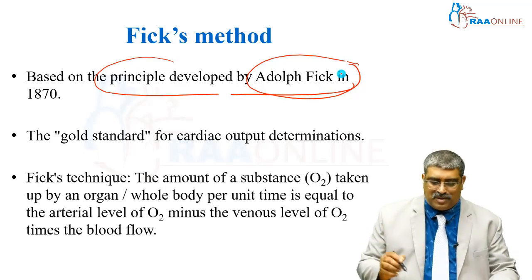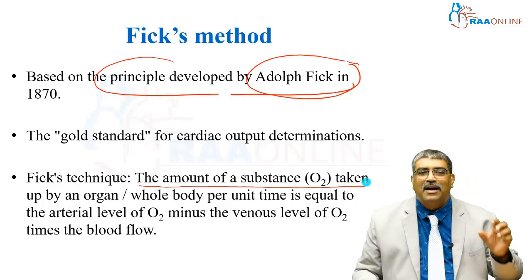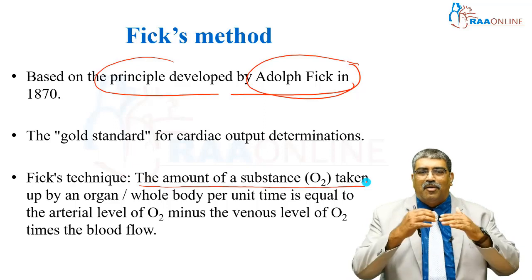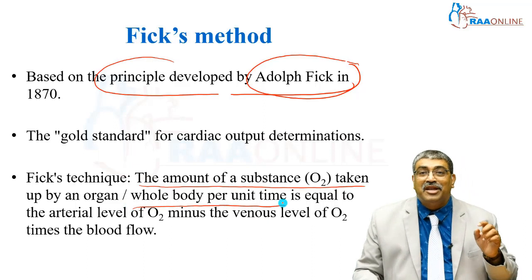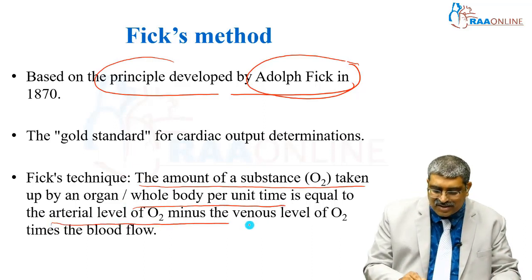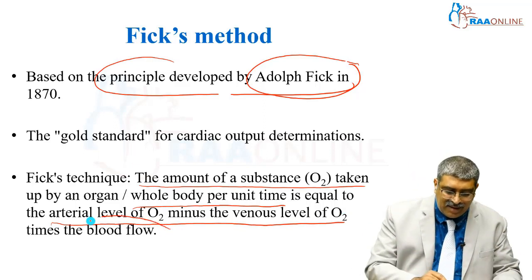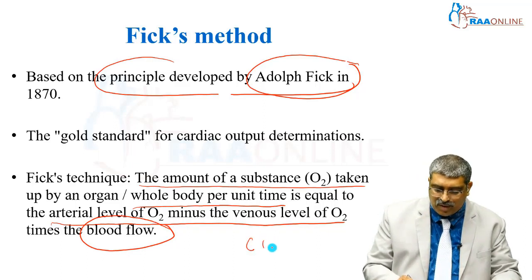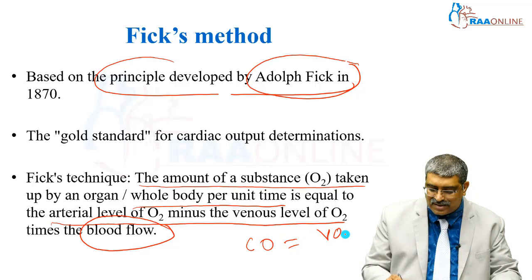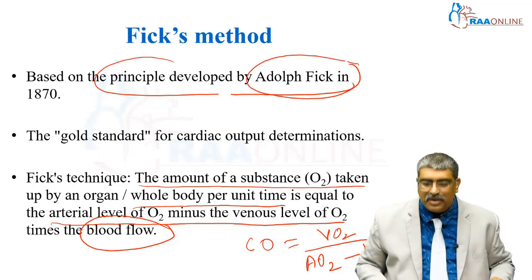What is Fick's principle? The amount of substance — for instance, oxygen — taken up by an organ per unit time is equal to the arterial level of oxygen minus the venous level of oxygen, times the blood flow. Here the blood flow is the cardiac output. Your cardiac output is equal to oxygen consumption divided by the difference of arterial oxygen minus venous oxygen. That is the basic principle.